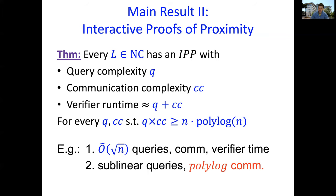For example, if you set both Q and CC to be roughly square root N, what you'll get is everything is roughly square root N: communication, number of queries, runtime, and so forth. A different setting of parameters that turns out to be useful is when you set the communication to be polylogarithmic, and then this result would give you slightly sublinear query complexity. You can get non-trivial query complexity even with just polylogarithmic communication.